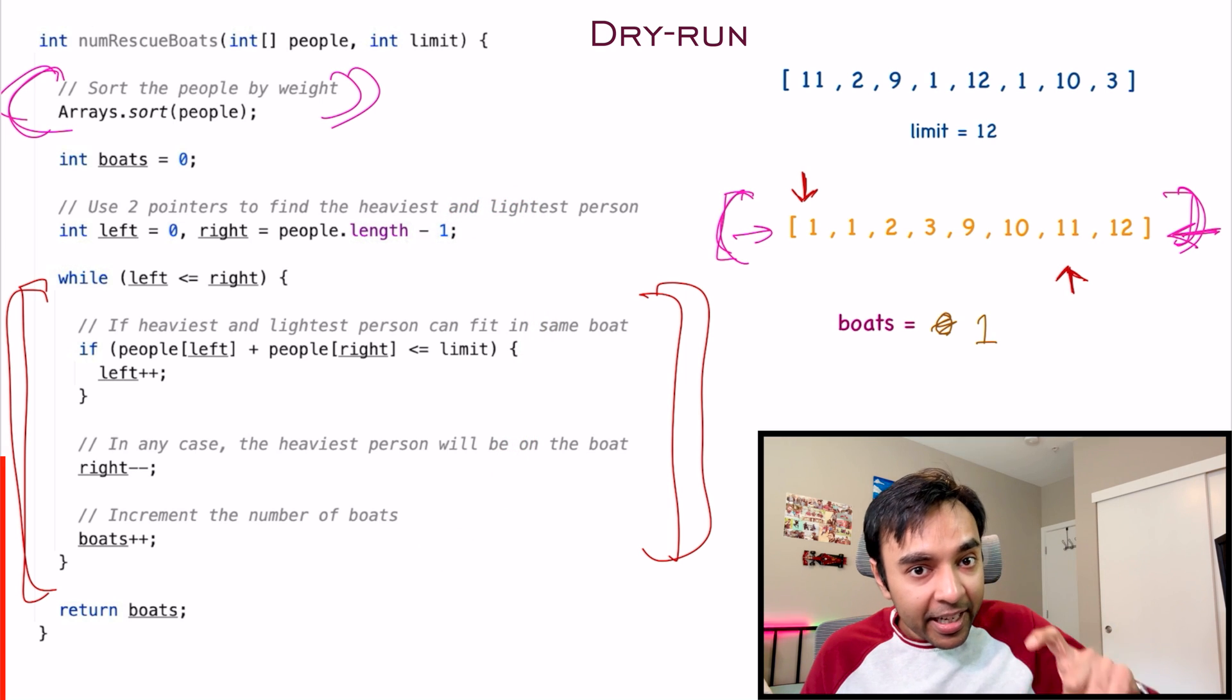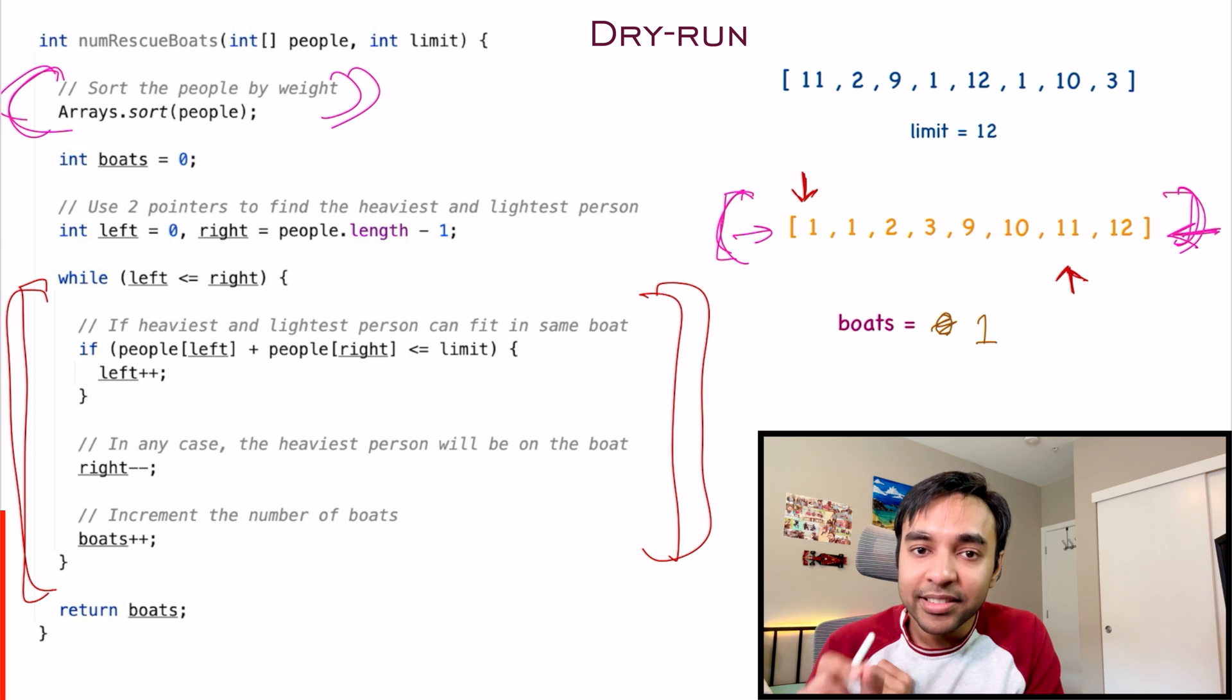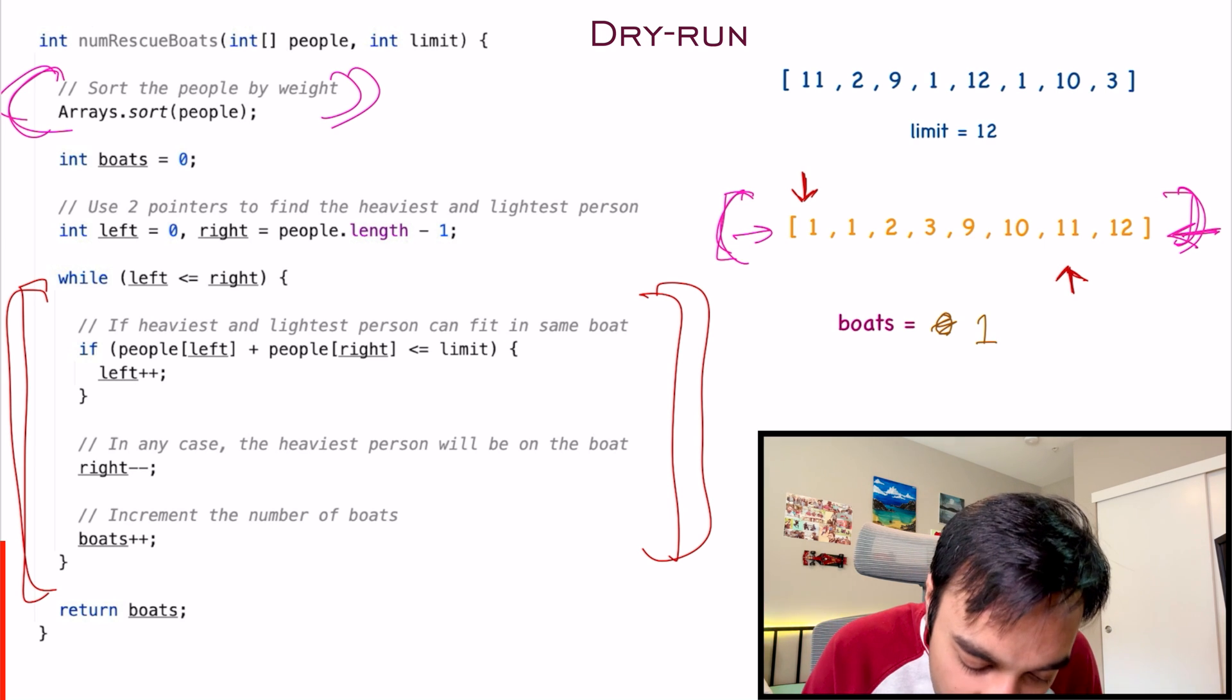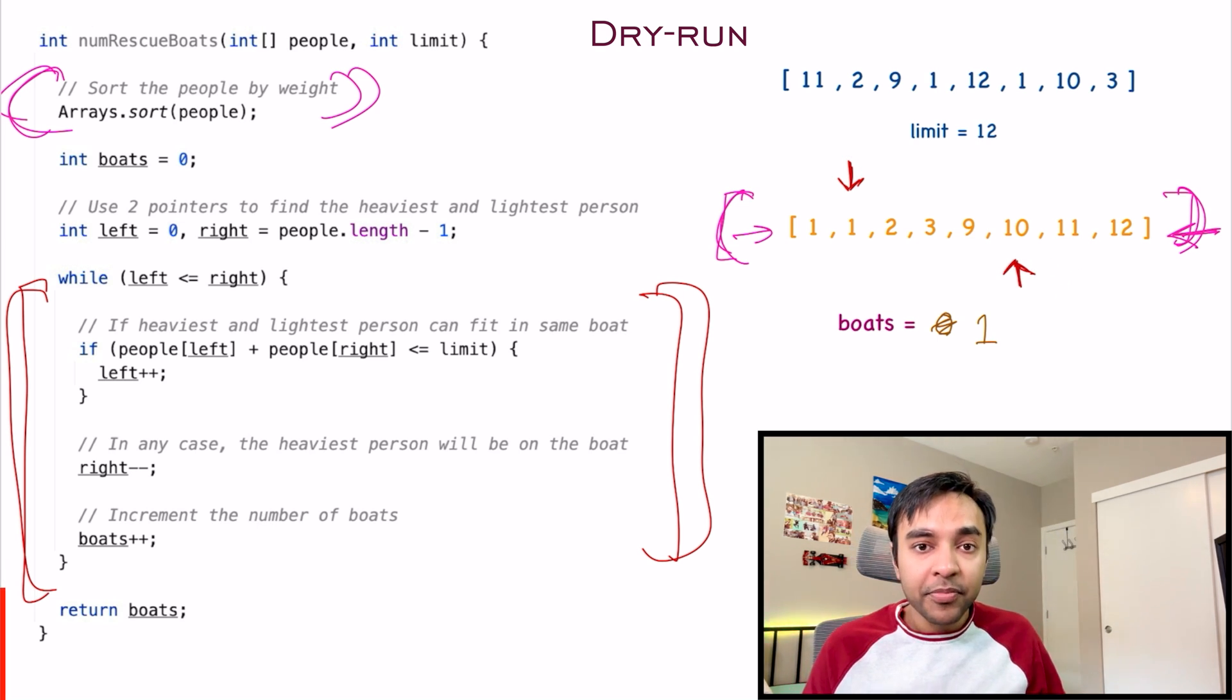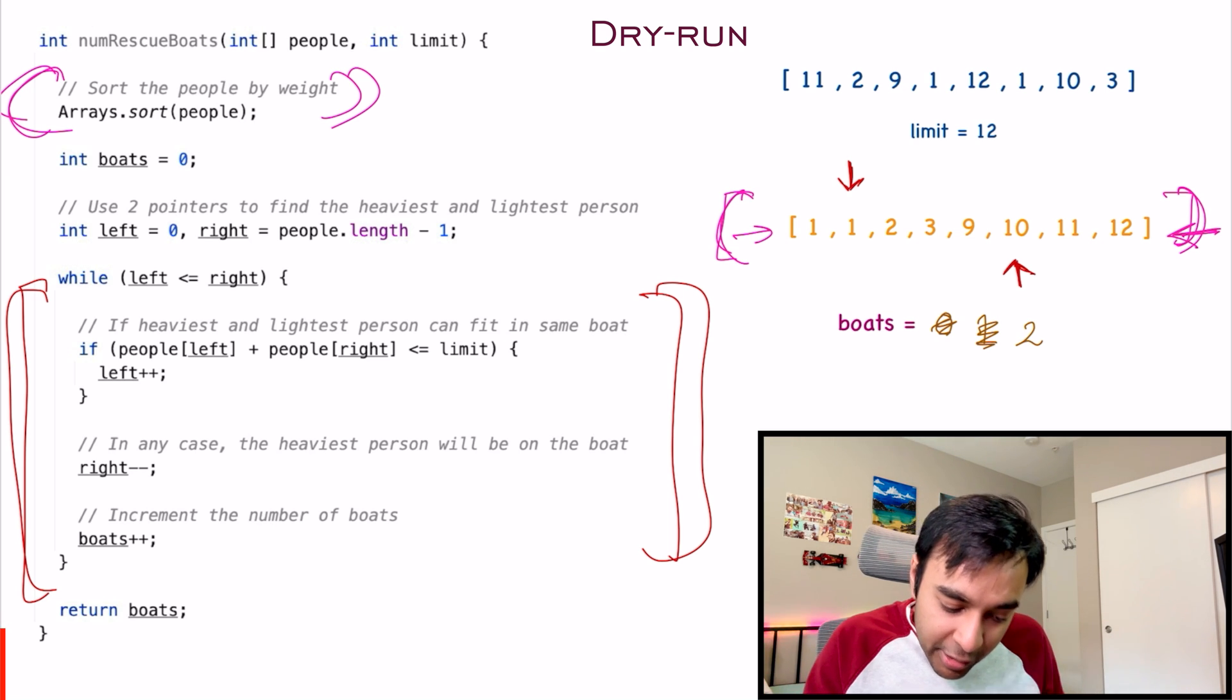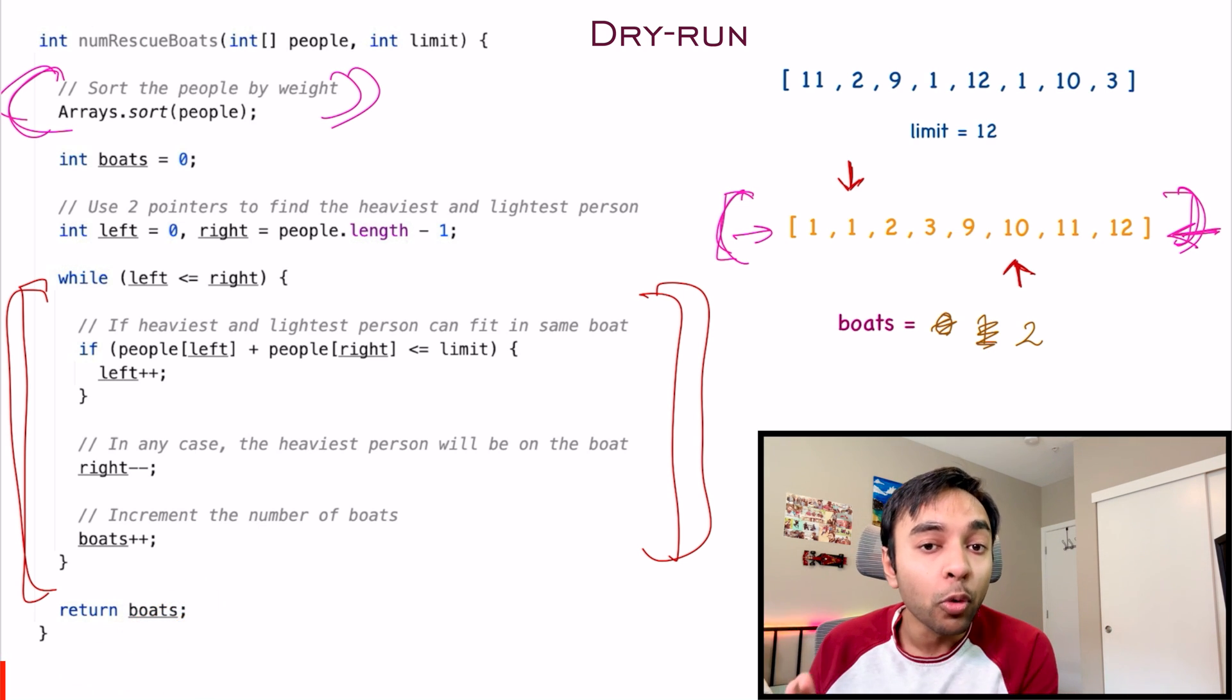This loop will now run again. And this time, what do we do? We try to put the person 11 and the person with the weight one in the same boat. This 11 plus one, it is less than equal to 12. So they can come in the same boat. What does that mean? I can easily move my left pointer also one step ahead, because one person got in the same boat. And the right pointer will anyway move one step backward because a heavier person went in the boat. And no matter what the case, I took up an additional boat. So I do a number of boats plus plus. This way, this loop will go on and these pointers will keep on advancing one step ahead. As soon as they reach a common point, this loop will stop. And at the end, you will return the total number of boats required.